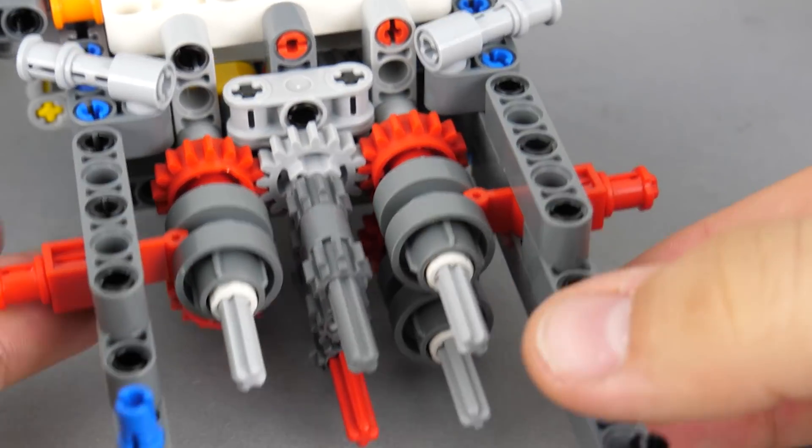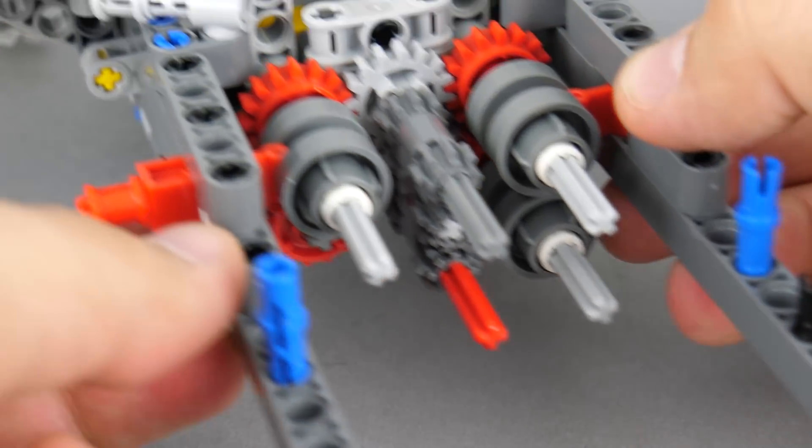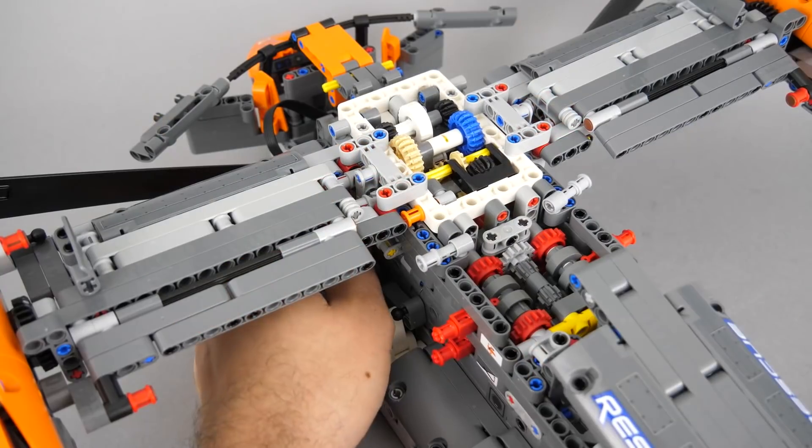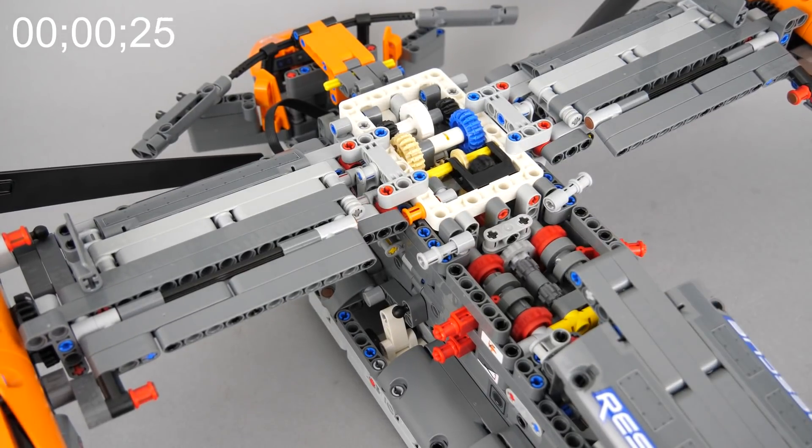Now let's see the fix that was published by Hugh from Brickset. He removed one of the 3L bars and added 3 more gears to the system. This way the power is transferred through more gears and the stress should be distributed more evenly. Let's test this solution.